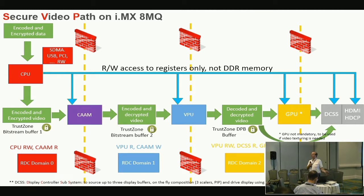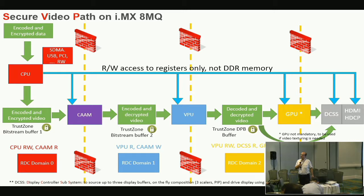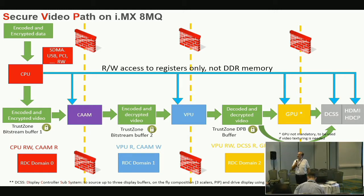If the CPU tries to read the secure memory it reads zero; if it tries to write, nothing happens — it is truly hardware protection. Even if a TA is compromised, the CPU has no access to this memory at all, so there is no risk of copying secure content back to non-secure memory. The secure buffer is allocated using a carve-out heap in ion.